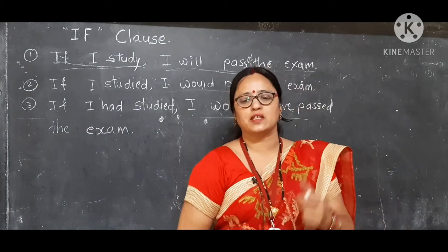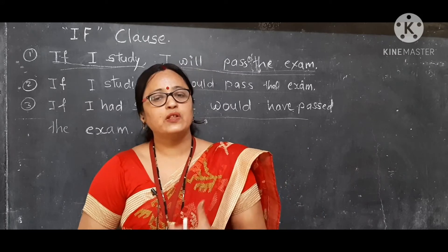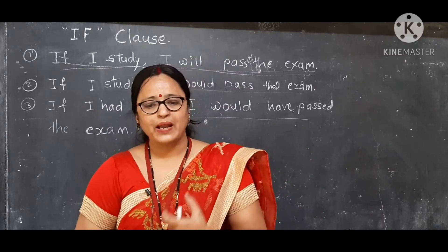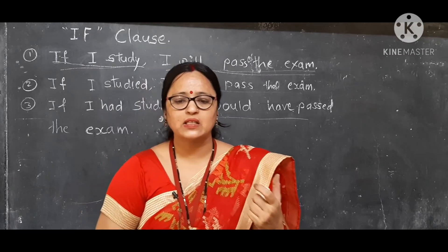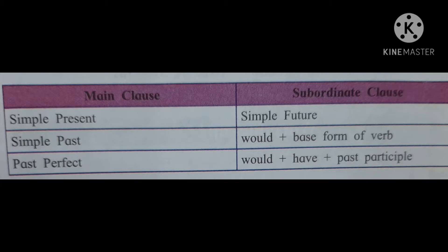According to the tenses in these examples, you can conclude the rules for if clause. If the subordinate clause is in simple present tense, then the main clause will be in simple future tense. If the subordinate clause is in simple past tense, then the main clause will use 'would' plus the base form of the verb. If the subordinate clause is in past perfect tense, then the main clause will use 'would have' plus the past participle.